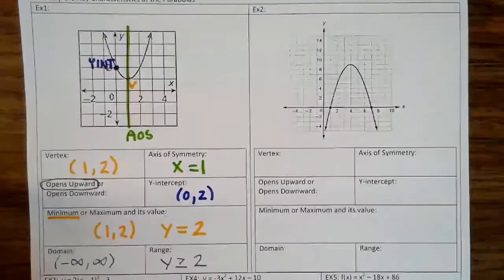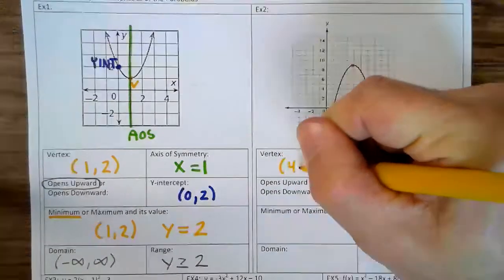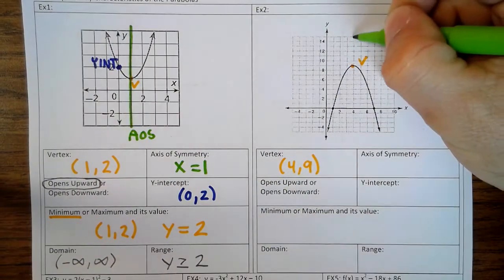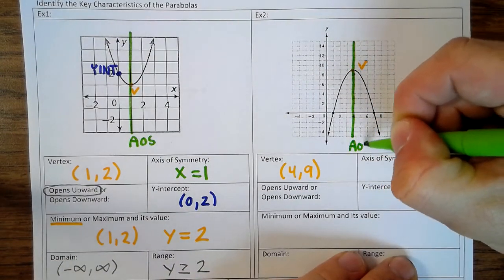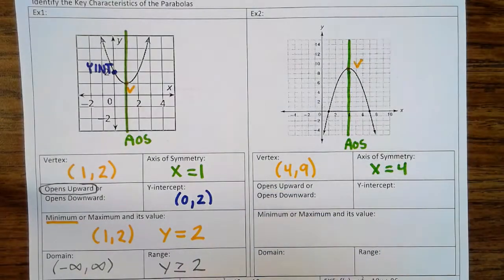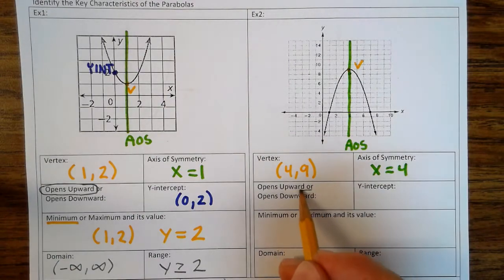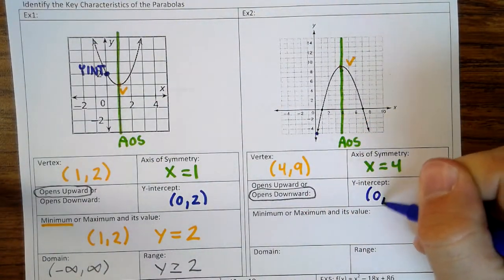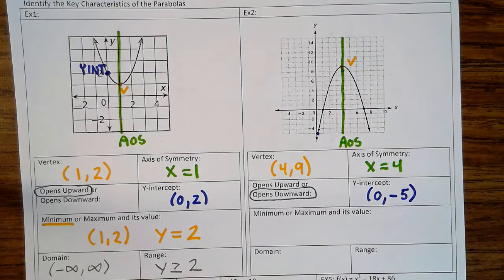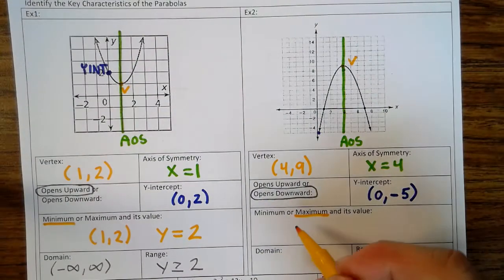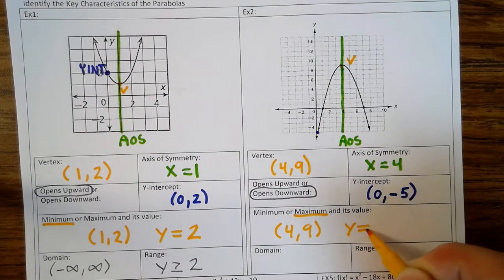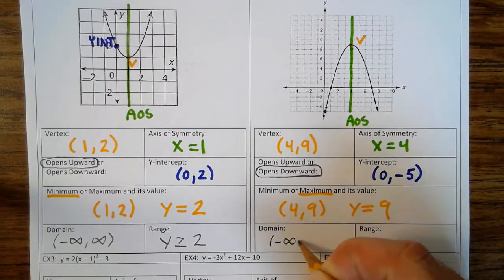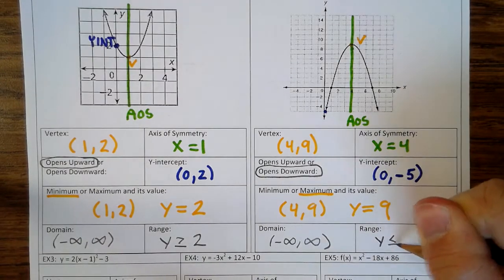Now let's look at example 2. The vertex, in this case, is a maximum at (4, 9). The axis of symmetry is x = 4. The graph opens downward and the y-intercept is (0, -5). It's a maximum and we use the y value from the vertex, so y = 9. The domain is negative infinity to positive infinity, and the range is y ≤ 9.